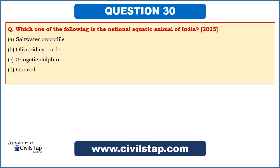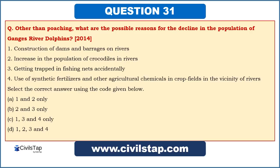The last question, asked in prelims 2014: other than poaching, what are the possible reasons for the decline in population of Ganges River Dolphin? First — construction of dams and barrages on rivers; second — increase in the population of crocodiles in rivers; third — getting trapped in fish nets accidentally; fourth — use of synthetic fertilizers and agricultural chemicals in crop fields near rivers. Statement 1 is correct — habitat destruction from dams is a main reason. Statement 2 is not the reason. Statement 3 is correct — accidental entrapment in fish nets is a real threat. Statement 4 is also correct — river pollution from chemicals is a main reason. So the answer is C — that is 1, 3, and 4.